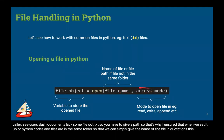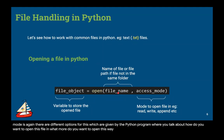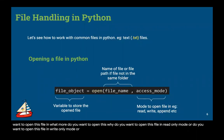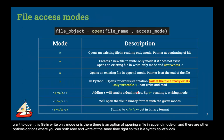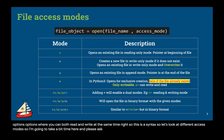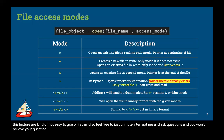The access mode tells Python how you want to open the file — in read-only mode, write-only mode, append mode, or both read and write simultaneously. Let's look at the different access modes. Feel free to unmute and ask questions, because these sub-topics are not easy to grasp the first time.